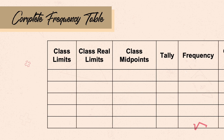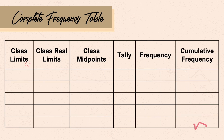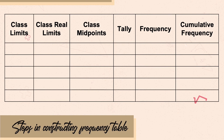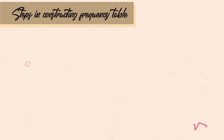A complete frequency distribution table includes the following columns: class limits, class real limits, class midpoints, tally, frequency, and cumulative frequencies. Each of these will be discussed through the following steps.